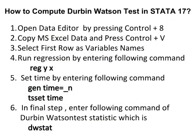How to compute the Durban-Watson test in Stata 17. In step 1, open the Data Editor by pressing CTRL+8. In step 2, copy the MS Excel data and press CTRL+V. In step 3, select the first row as variable names. In step 4, run the regression by entering the command: reg y x.